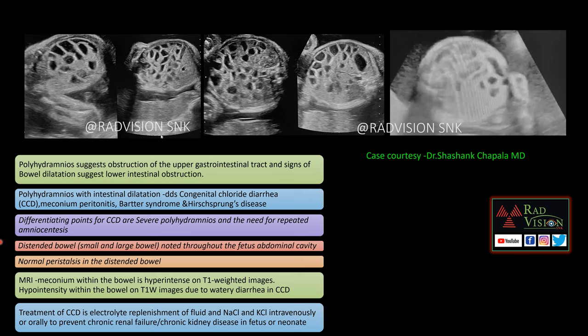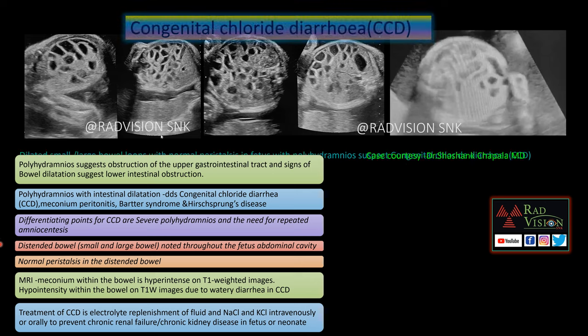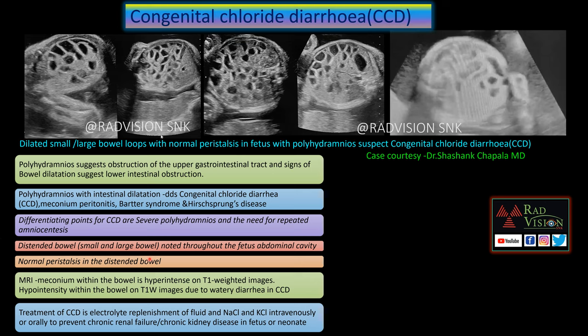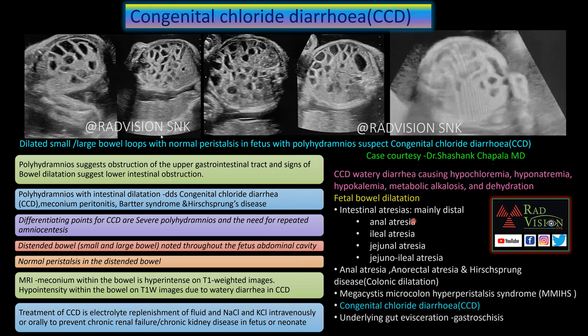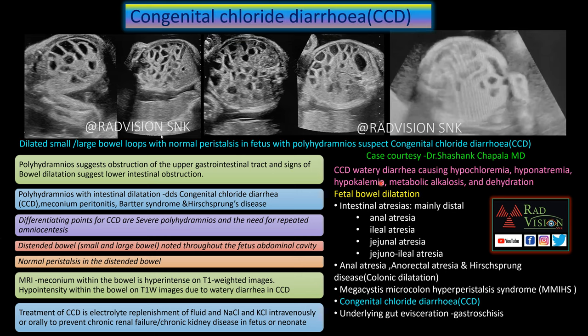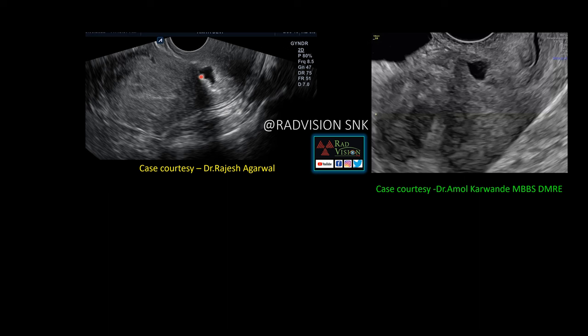The treatment of congenital chloride diarrhea is replenishment of fluid, sodium chloride, and potassium chloride to prevent chronic renal failure and chronic kidney disease. This is a case of congenital chloride diarrhea — you can pause the slide to review all the other causes of fetal bowel dilatation. Thanks to Dr. Shashang Chapala for contributing this case.